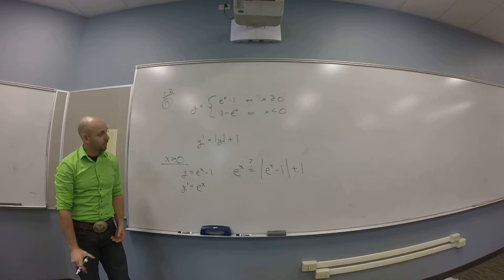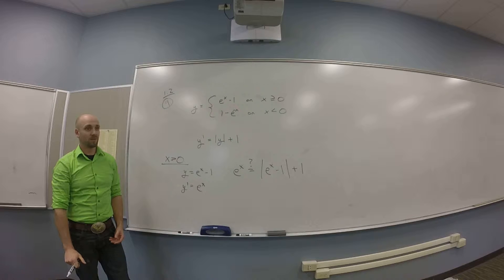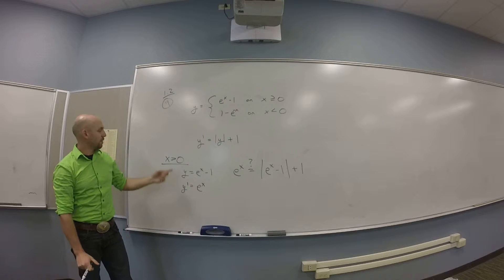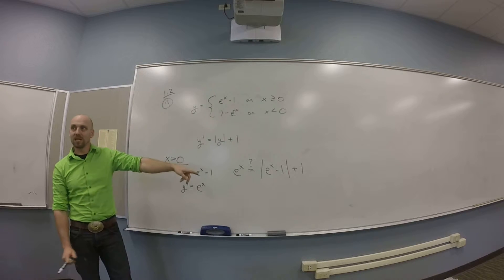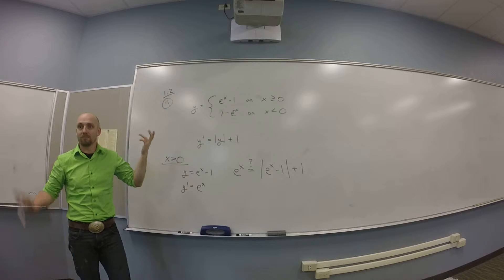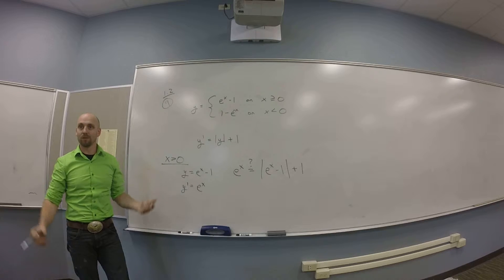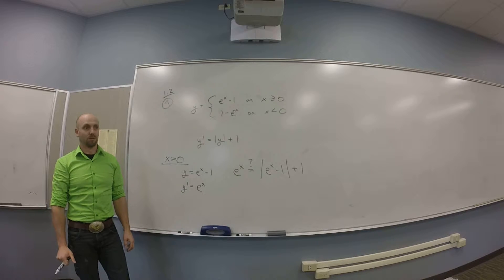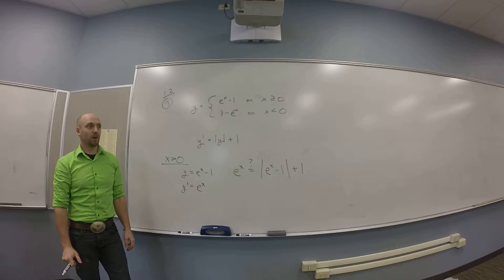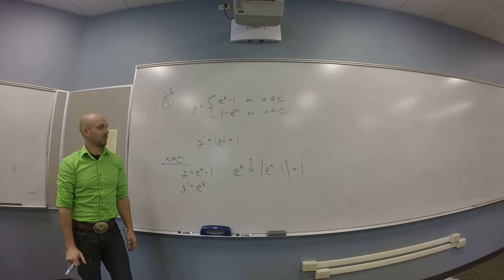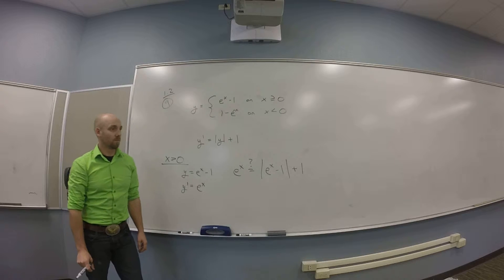What's e to the x minus 1 any time x is bigger than zero? Is that positive, negative, or maybe both? It's strictly positive. So those absolute value brackets are being applied to this quantity — is e to the x minus 1 always at least zero when x is positive?